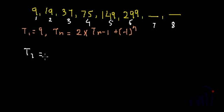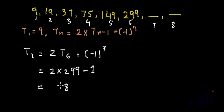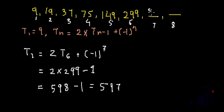Let us find the 7th term. t7 equals 2 times t6, plus (−1) to the power 7. Since t6 is 299, this is 2 times 299, and (−1) to the power 7 is minus 1 because minus 1 raised to any odd number gives minus 1. So t7 equals 598 minus 1, which equals 597. Our seventh term is 597.